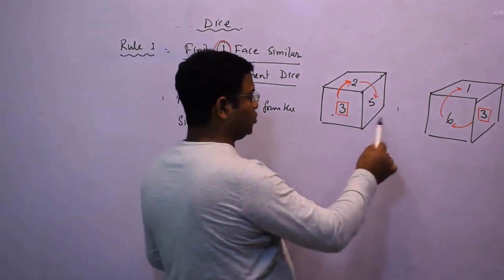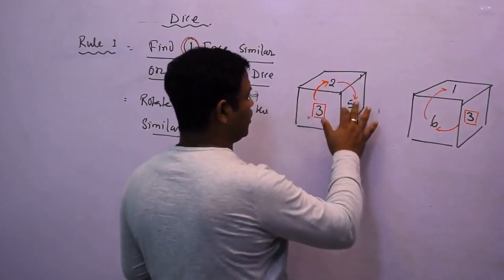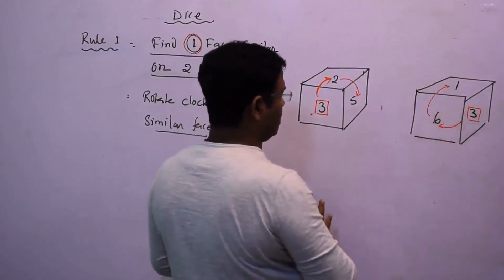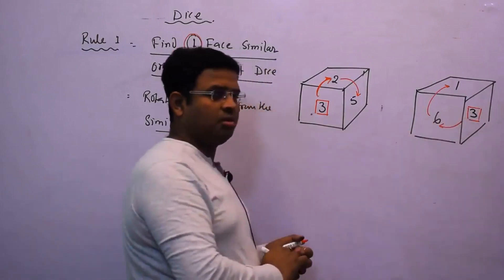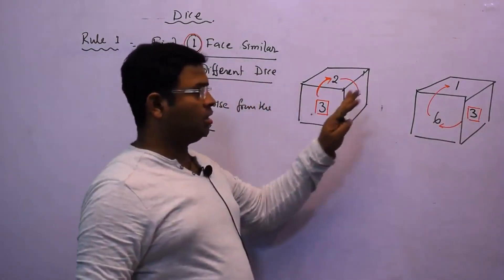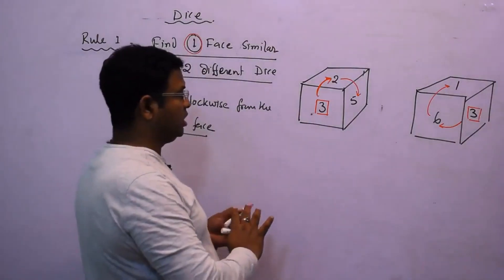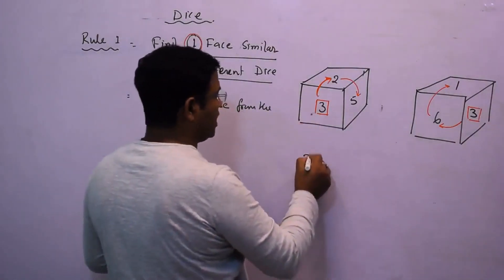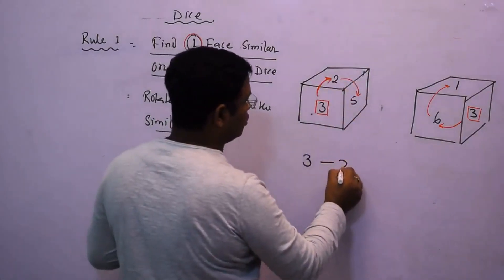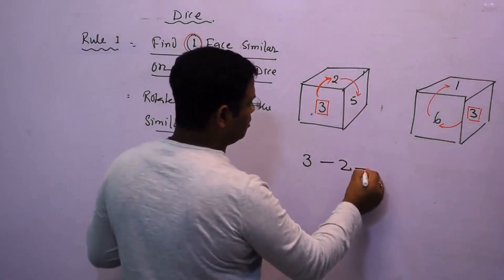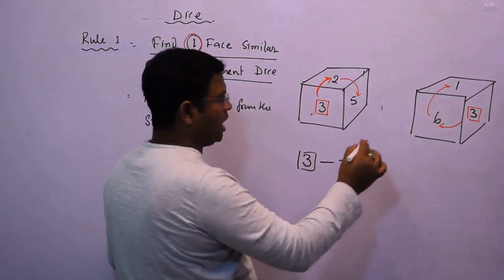Here there are two different dice: one shows 3, 2, 5 and the other shows 3, 6, 1. In those two dice, 3 is the similar number — no other number is similar. So I take 3 as the similar face from this dice, rotate clockwise, and after 3 comes 2, and after 2 comes 5.